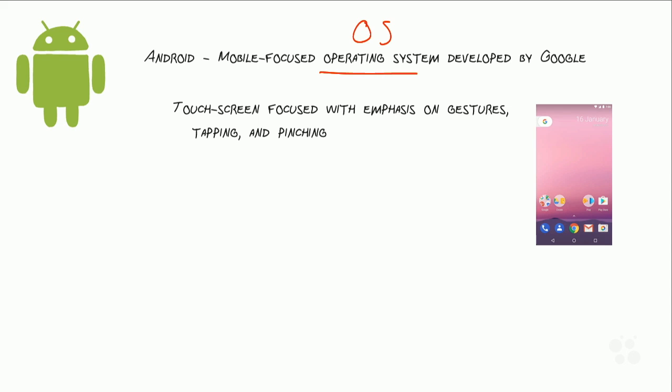So what does that mean to be mobile-focused? It means that it's touchscreen-focused. The Android OS and the features in the Android OS are intended to be touched with your hands, with your fingers. You are not using a keyboard and mouse, typically, when you work with Android, and that changes the way that the UI works. There is a big emphasis on things like gestures, tapping, and pinching. Pinching is when you use two fingers to zoom in or zoom out on something on your phone.